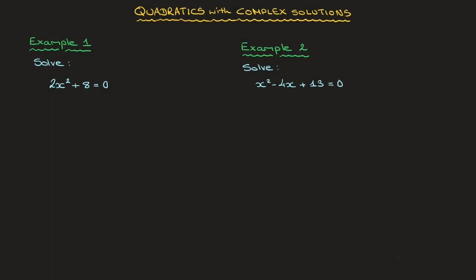The first example: we need to solve 2x squared plus 8 equals 0. To solve this equation, I start by subtracting 8 from both sides, which leads us to 2x squared equals negative 8. Next, I divide both sides by 2, which leads us to x squared equals negative 4.